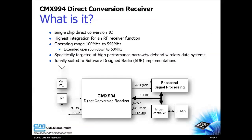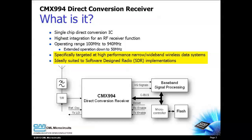The CMX994 is a high performance single chip RF receiver that uses direct conversion to transform RF signals to baseband. The CMX994 direct conversion architecture provides for the highest integration for RF receive functionality. The CMX994 supports a wide frequency range of 100 megahertz to 940 megahertz, and extended operation down to 50 megahertz is also supported. The CMX994 is specifically targeted at high performance narrowband applications including software defined radio.